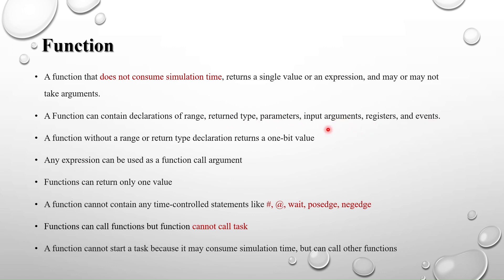A function without a range or return type declaration returns a one-bit value. When you don't mention the return type, it will return a one-bit value by default. Any expression can be used as a function call argument — we will see this in the examples.